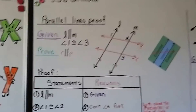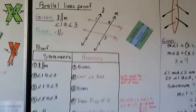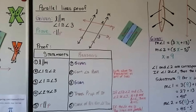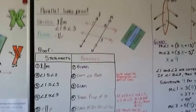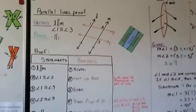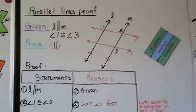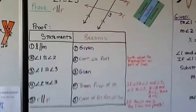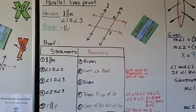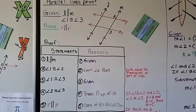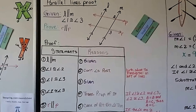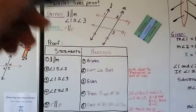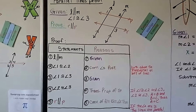Now we have a parallel lines proof — you might want to copy this down. It's given that l is parallel to m, and it's also given that angle 1 is congruent to angle 3. We need to prove that r is parallel to p. In the two-column proof: statement 1 is that l is parallel to m, given. Statement 2 is angle 1 is congruent to angle 2 by the corresponding angles postulate — they're both above the transversal and on the left side of their lines.